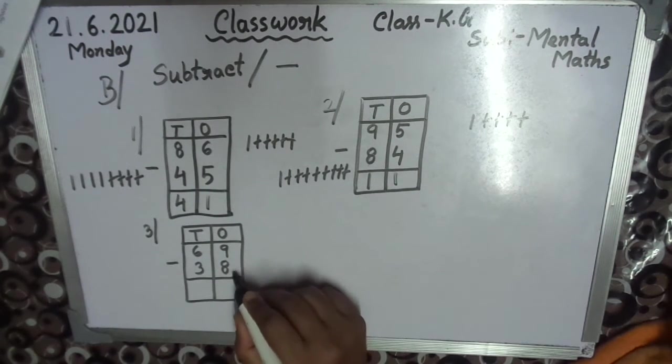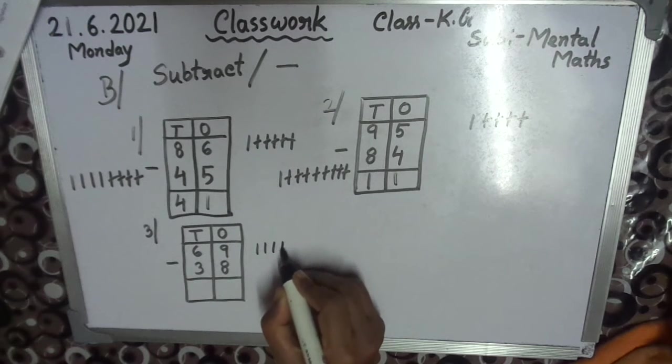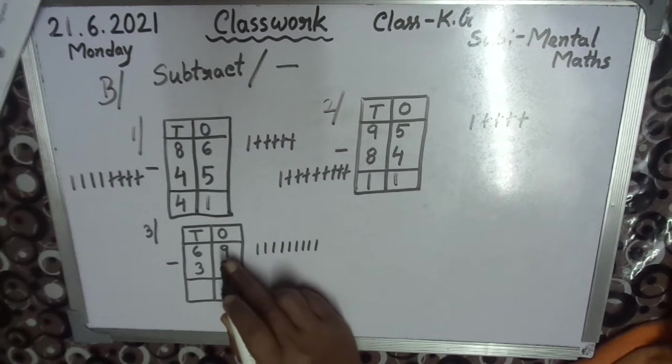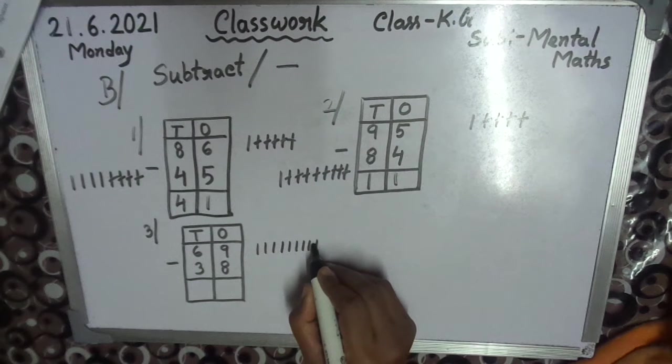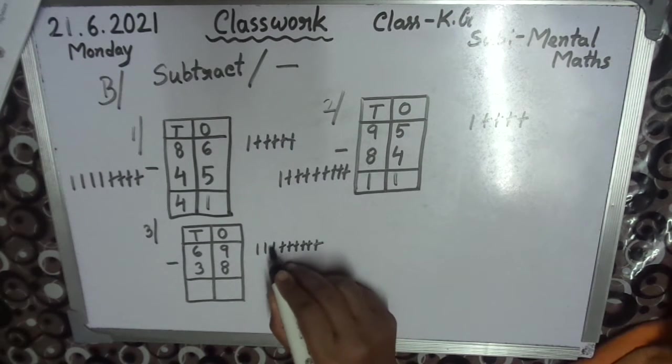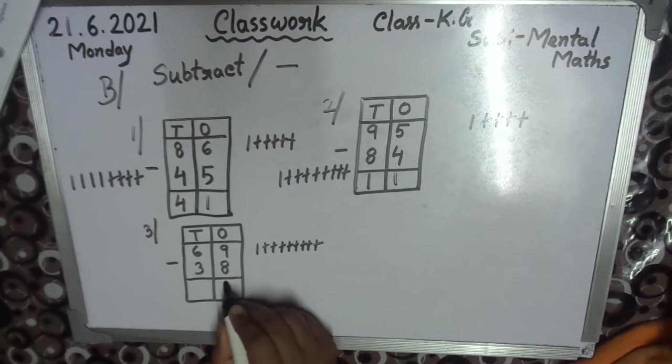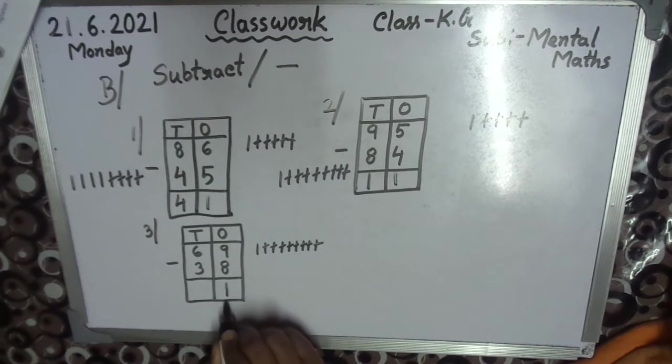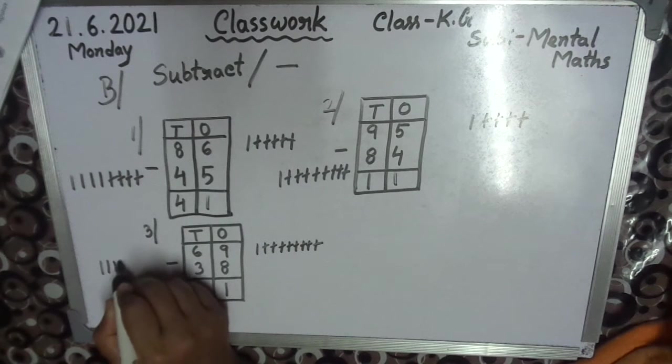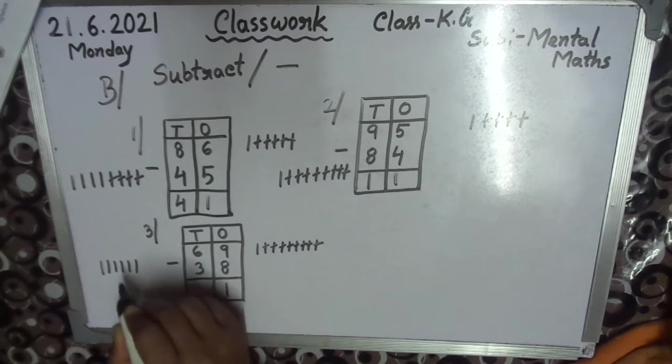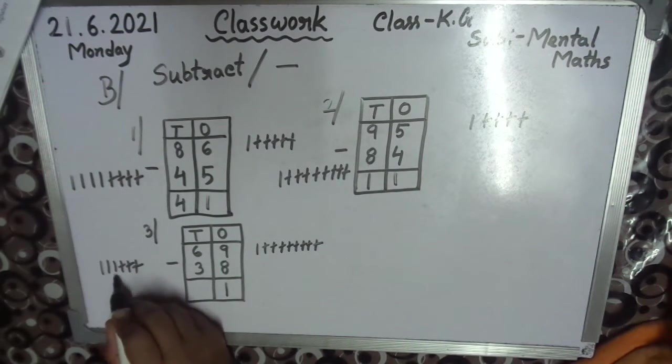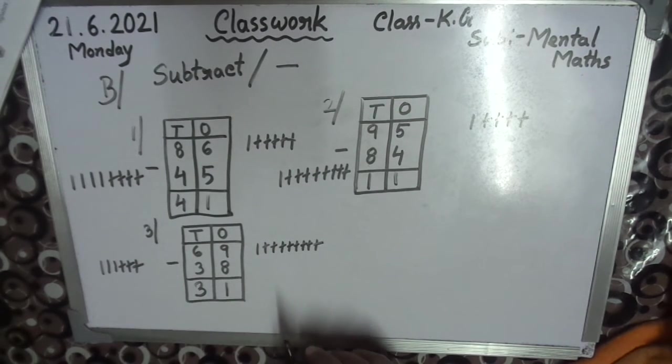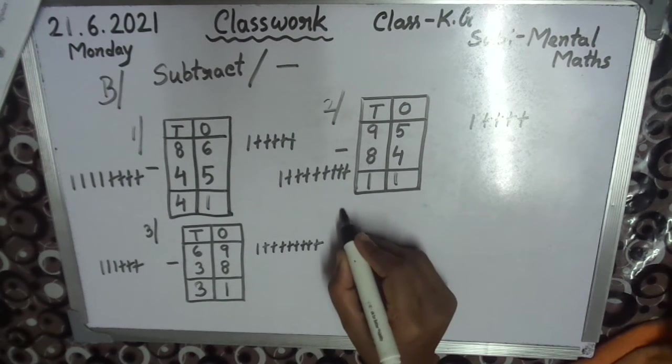9, 8. 9 is big number than 8. 8: 1, 2, 3, 4, 5, 6, 7, 8. See, left 1. Answer I write here, 1. 6: 1, 2, 3, 4, 5, 6. 3 small number, so see 1, 2, 3. So count left 1, 2, 3. So answer 3. Answer is 31.